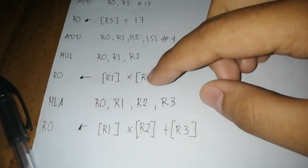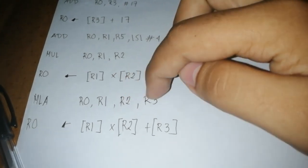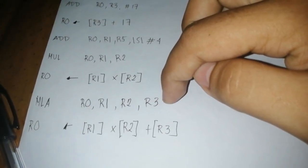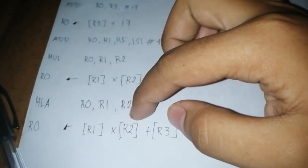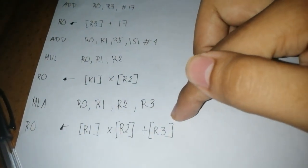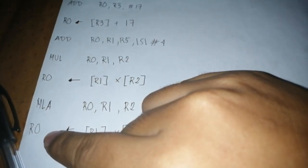So here MLA, register R0, register R1, register R2, register R3, where you will multiply R1 to register R2 plus R3. And the answer will put in R0.